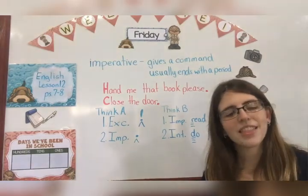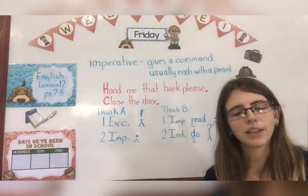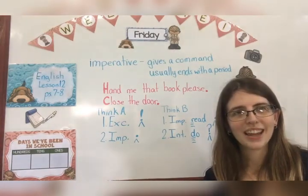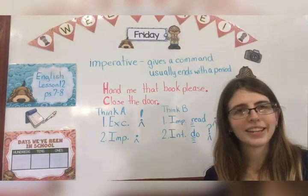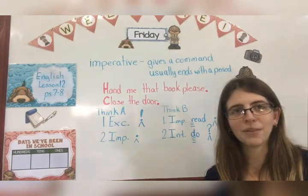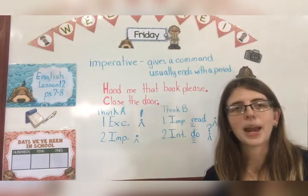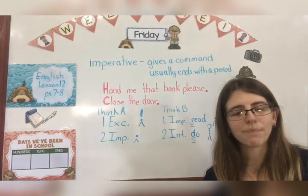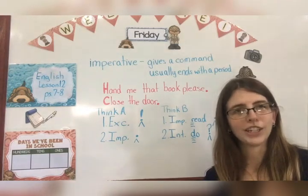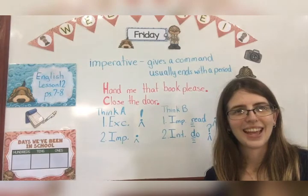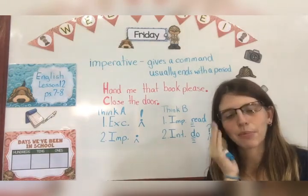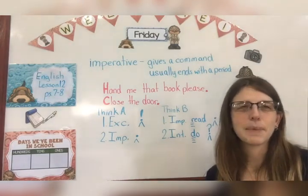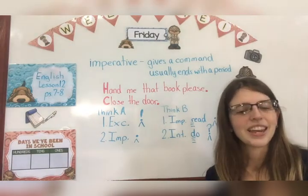Turn the page. Think A on page 8 says rewrite each sentence with the correct capitalization and punctuation. Each one is a sentence, but you need to write it again with the first letter capitalized and a period, question mark, or exclamation point — you have to decide which one you need at the end. Number one: a barn owl is also a nocturnal creature. What letter should be capitalized? A, right, because it starts the sentence — so capitalize A. And what punctuation do you need at the end? Excellent — a period, because it's just a declarative sentence. Now do the rest of those.